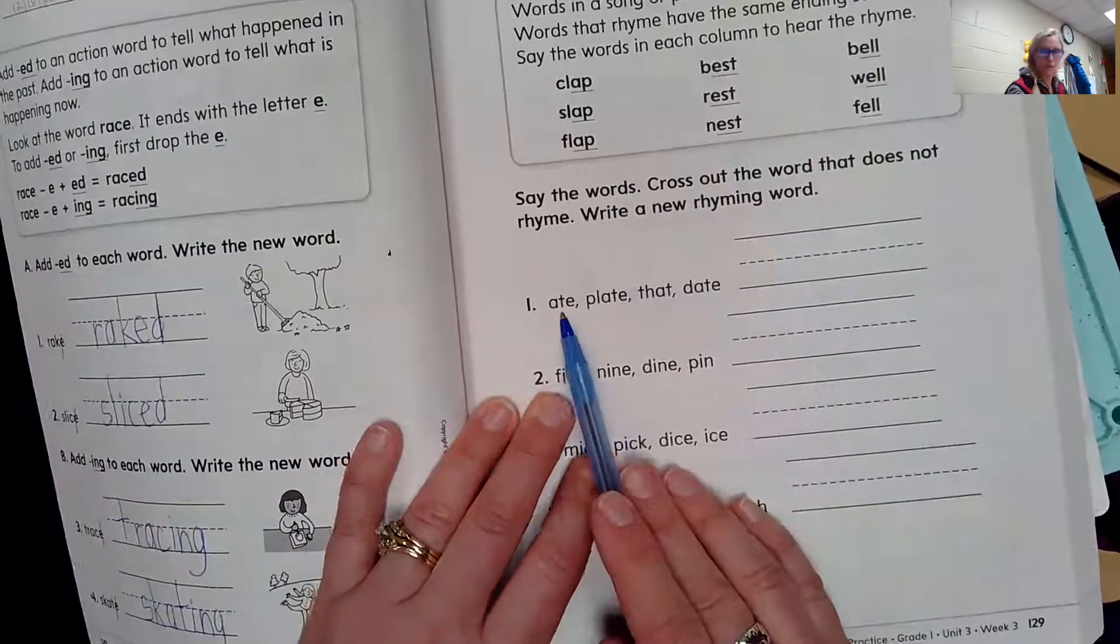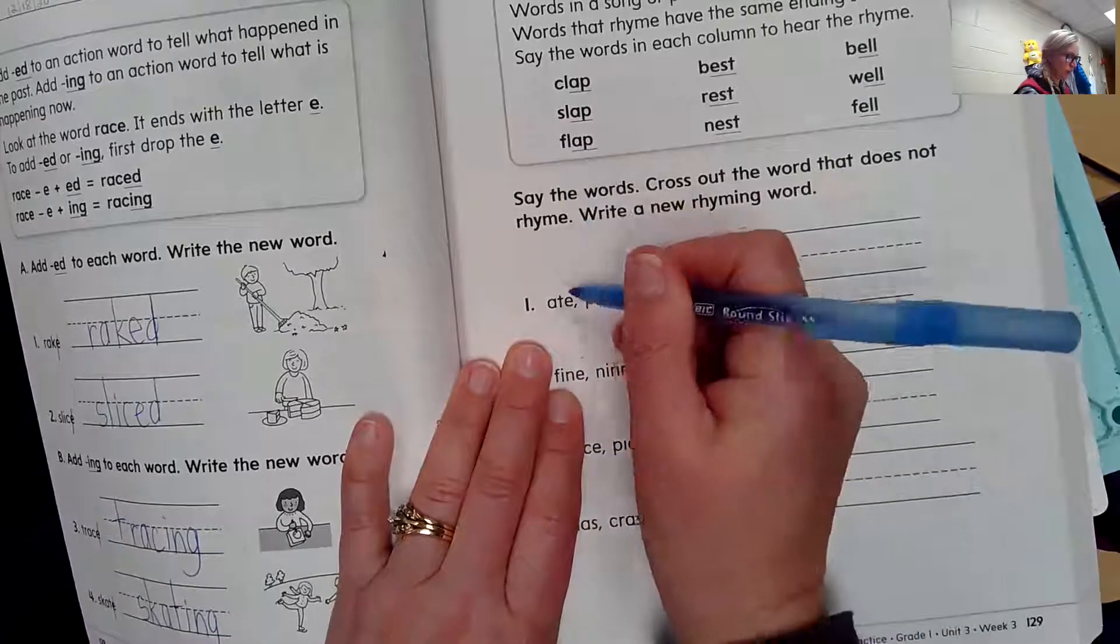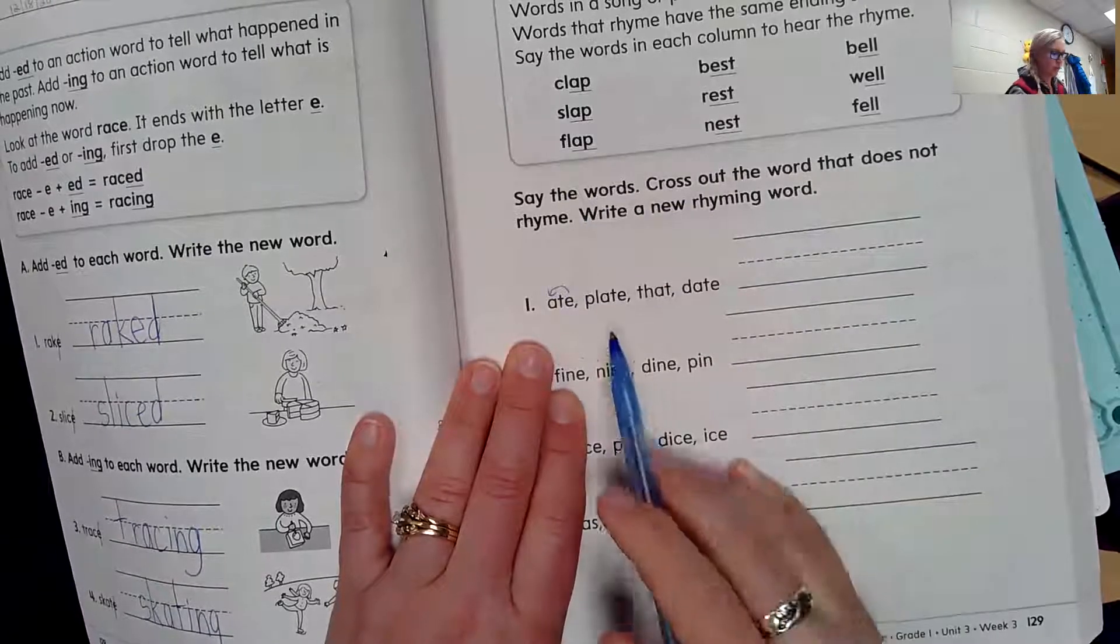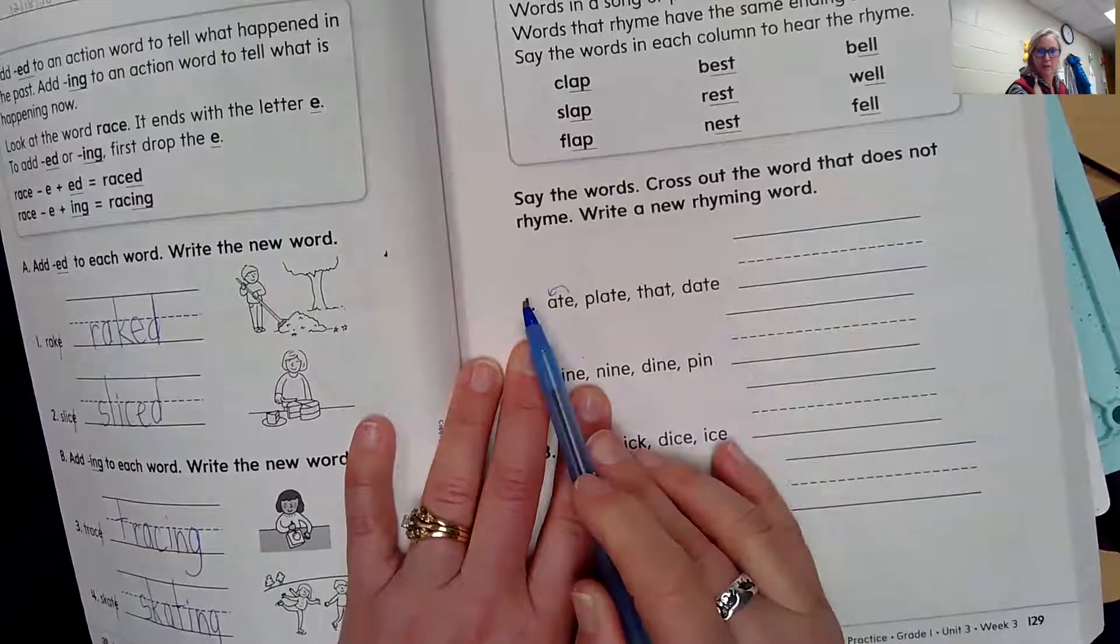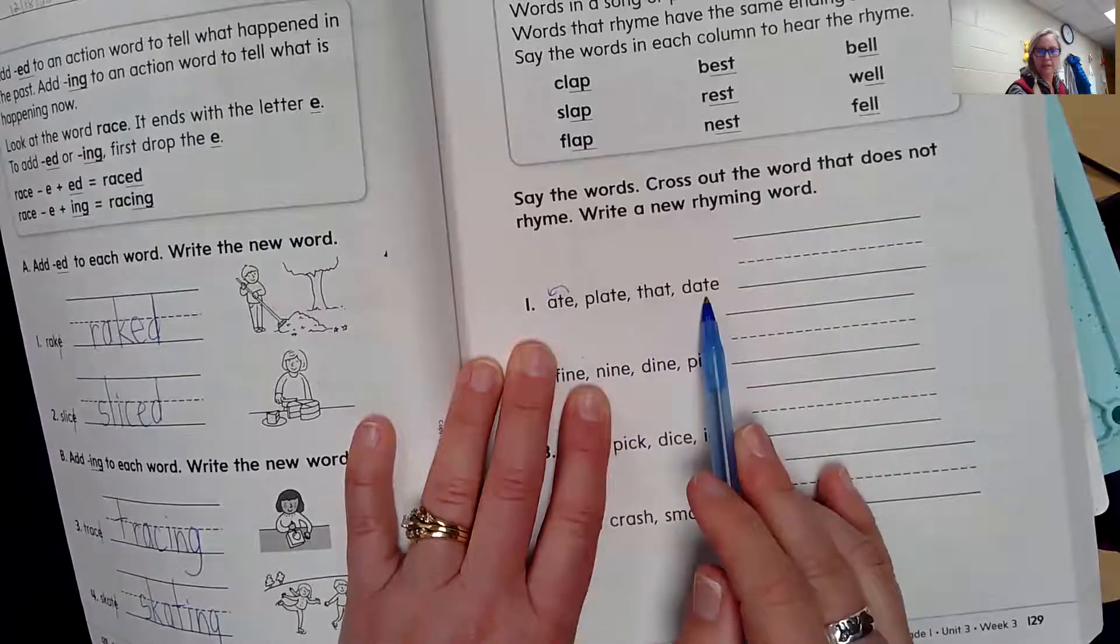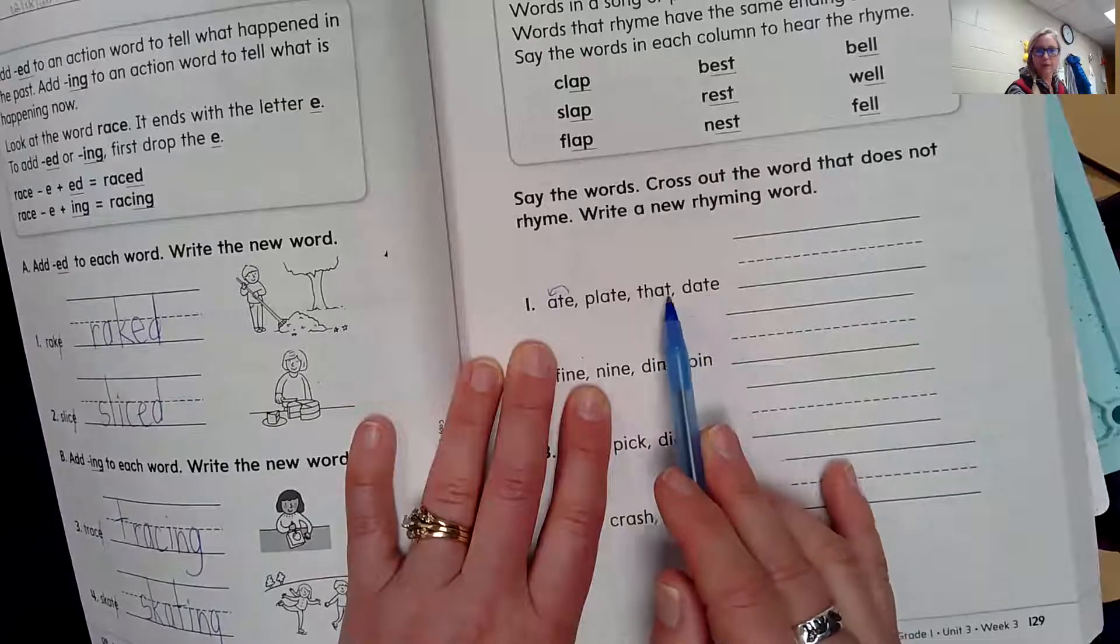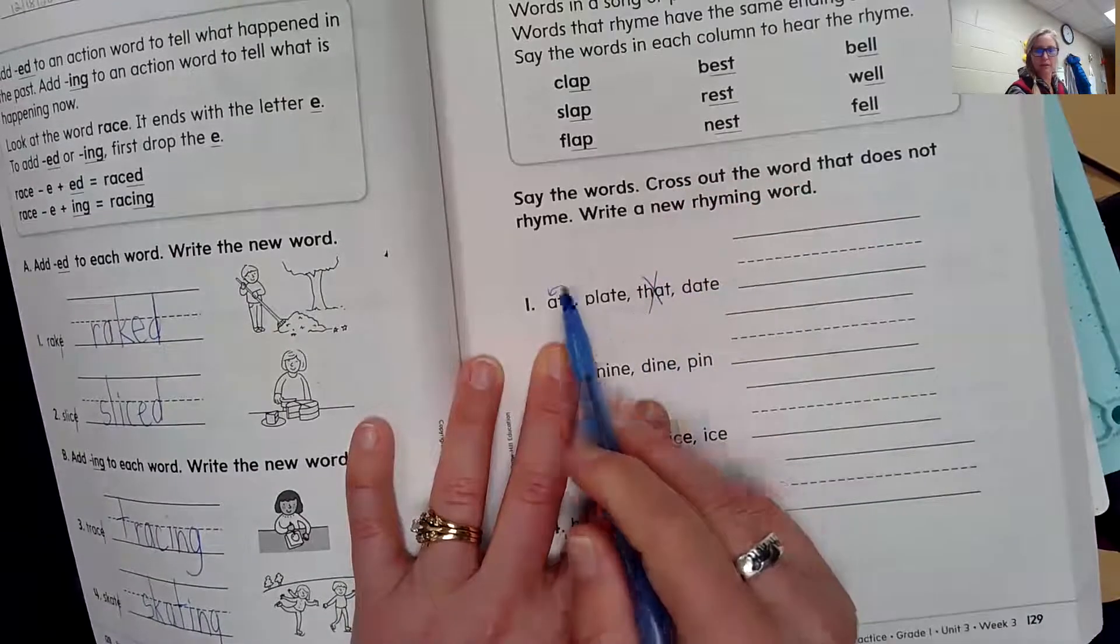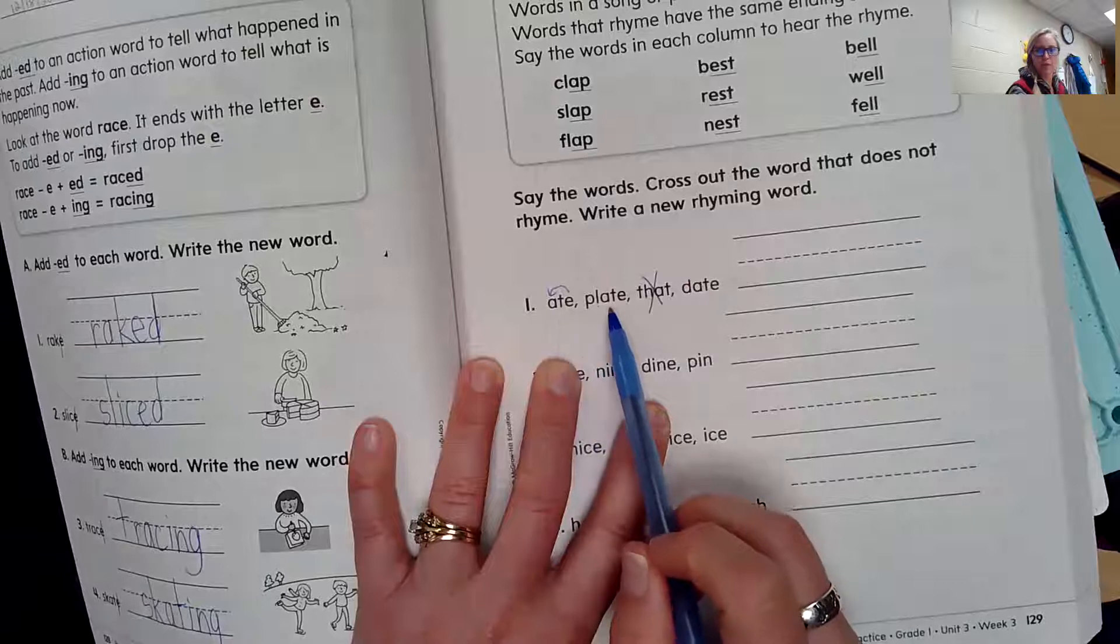We have eight. Look at our pattern here. We've got a long A sound. There's our pattern we've been working on, our vowel consonant E. Eight, plate, that, date. What word does not rhyme? You're right. That does not rhyme. That has a different ending. These all end with 'ate'.